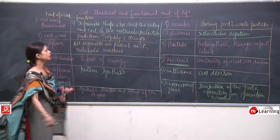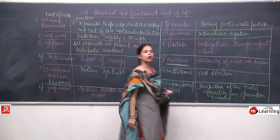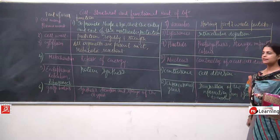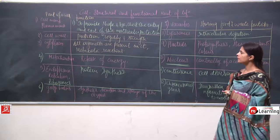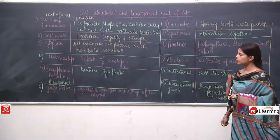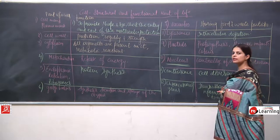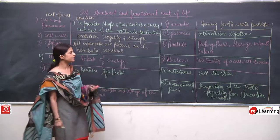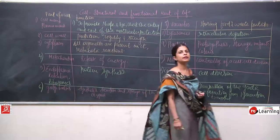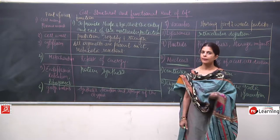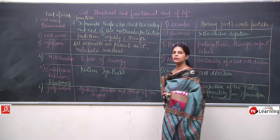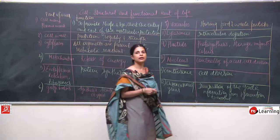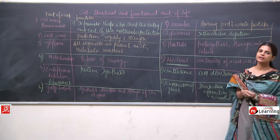Just by having a look at this chart, we can understand the functions of all the parts present inside the cell — covering cell wall, cell membrane, cytoplasm, mitochondria, endoplasmic reticulum, ribosomes, Golgi bodies, vacuoles, lysosomes, plastids, nucleus, centrosome, and chromosomes or genes. This was all about this chapter — hope you will understand the chapter properly through these answers and the discussion we had.